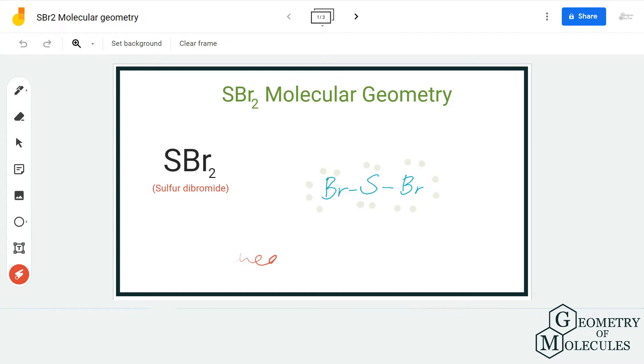But do not forget about the lone pairs that are present on the central atom. In molecular geometry, every lone pair counts for some change, and there is a distortion because of the lone pairs in the molecules.